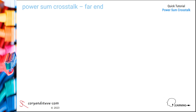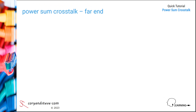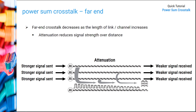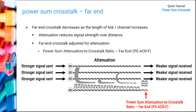Let's now take a look at measuring PowerSum Crosstalk at the destination end, or the far end, of the link or channel. PowerSum Crosstalk at the far end will always be lower on longer links or channels than on shorter ones because of attenuation or insertion loss, which reduces the strength of any signal over the length of a cabling run. So in order to provide a test limit applicable to every possible link or channel length, the PowerSum Crosstalk calculation at the far end is adjusted for the attenuation measured on the link or channel. The resulting value is called the PowerSum Attenuation to Crosstalk Ratio far end, or PS-ACRF.